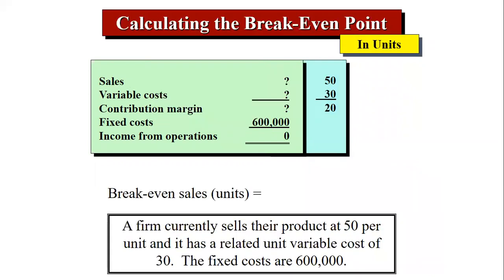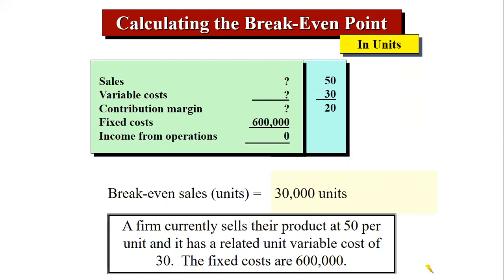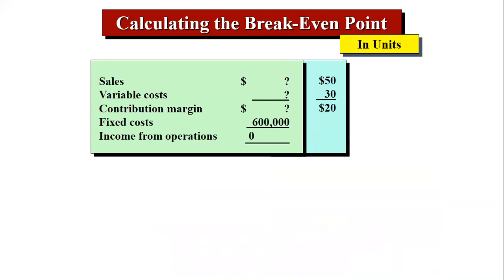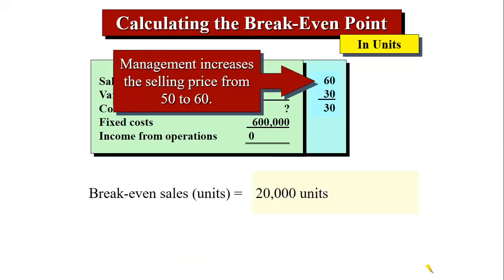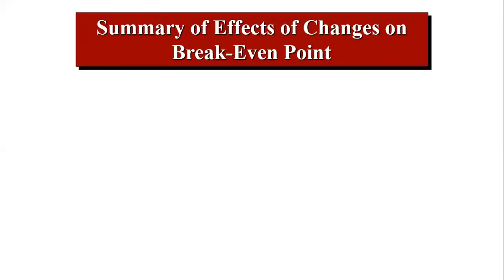Another example: fixed cost of 600,000 with a unit contribution margin of 20 gives a break-even of 30,000 units. If the selling price increases from 50 to 60, the new contribution margin becomes 30, so 600,000 divided by 30 equals 20,000 units. You can work these calculations forward or backward using algebraic formulas.